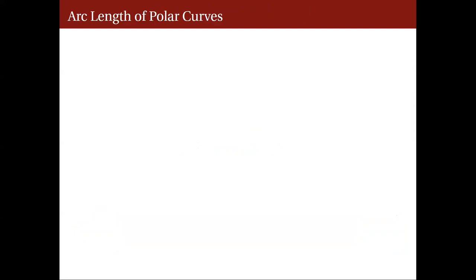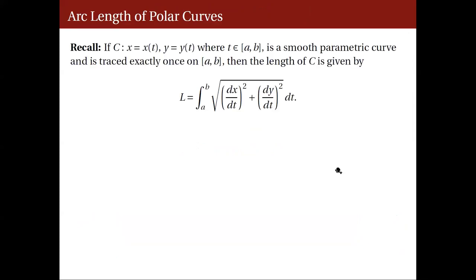For the arc length of polar curves, recall that in a smooth parametric curve C, the x and y are both functions of the parameter t. If the parametric curve C is traced exactly once from t equals a to t equals b, then its arc length is given by the following integral. The limits of integration correspond to the endpoints of the interval [a, b], and the integrand is equal to the square root of the sum of the squares of the derivatives with respect to the parameter t.